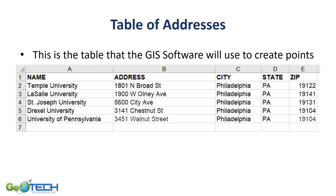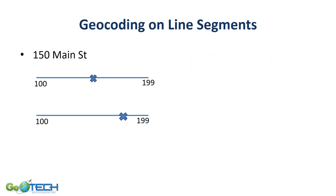Here is my table of addresses — these are universities within the city of Philadelphia. You can see I have the name, the address, the city, state, and zip code. One thing to remember is that the geocoding process uses linear interpolation, which means it takes that line segment and divides it equally. So in that 100 to 199 range, it's going to put 150 Main Street right in the middle. However, due to parcel size or physical barriers, 150 may actually be closer to 199. So it is important sometimes to go and ground truth your data.